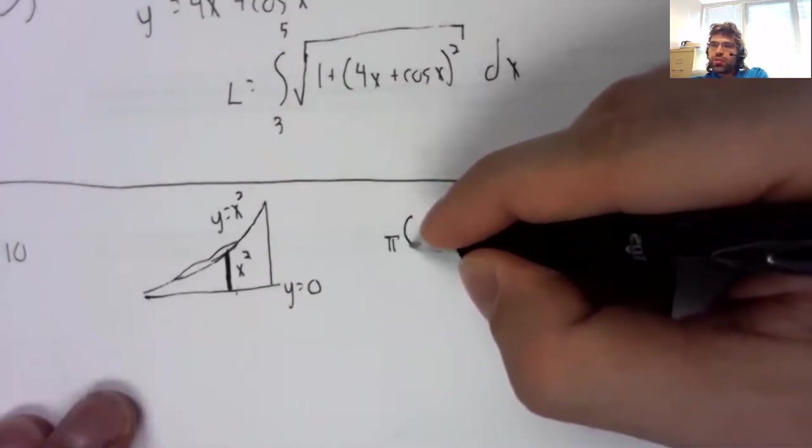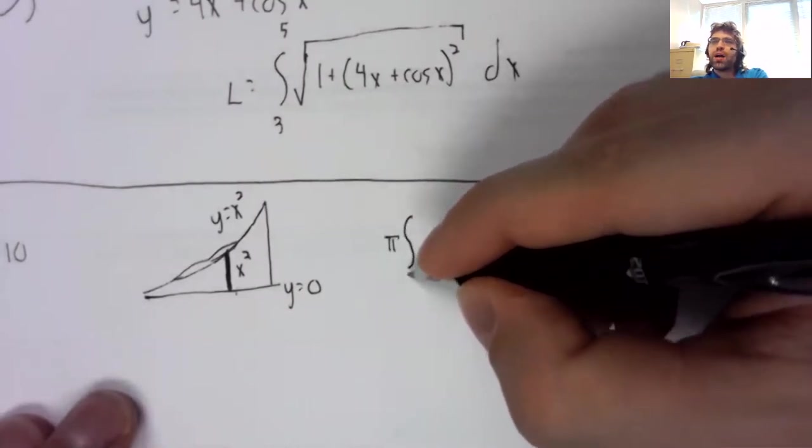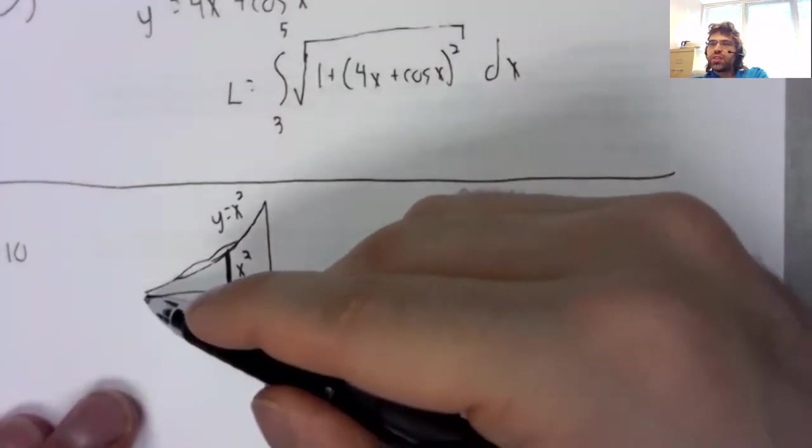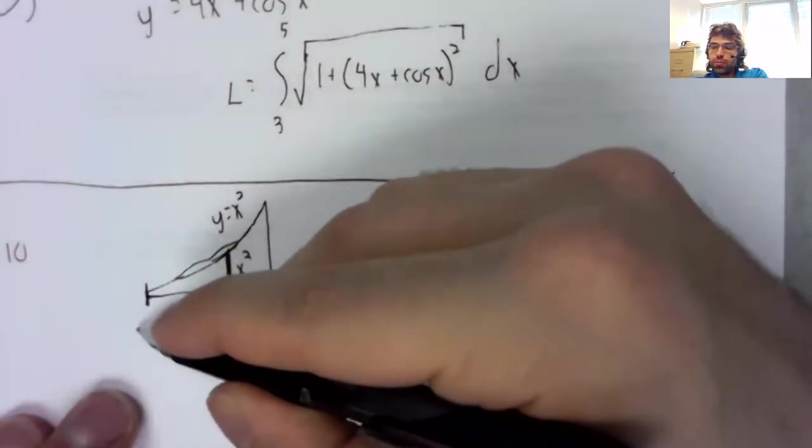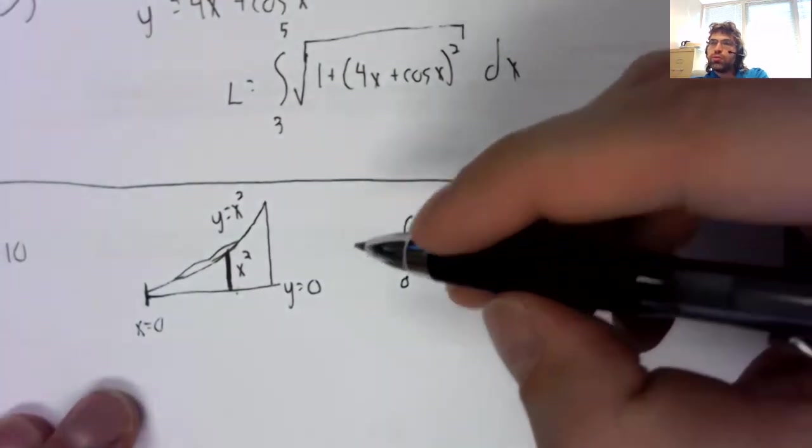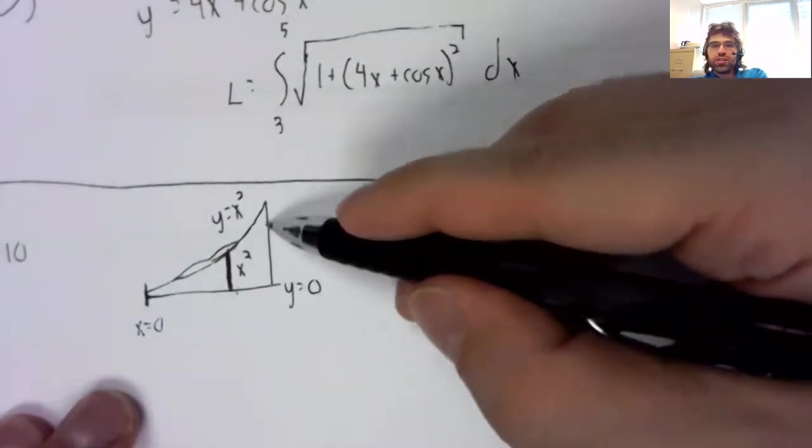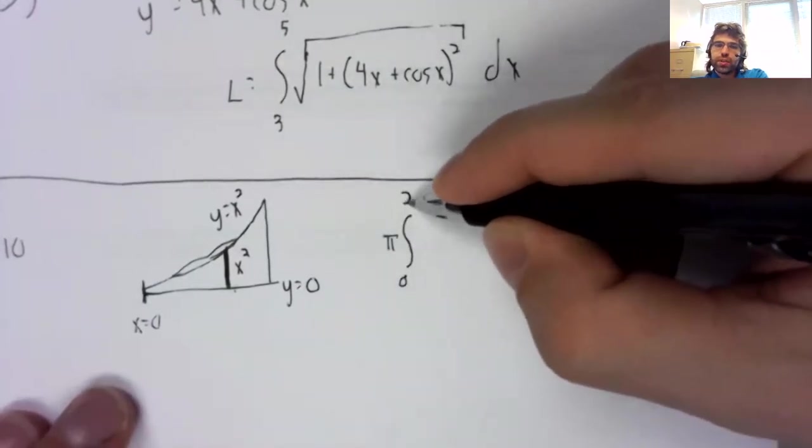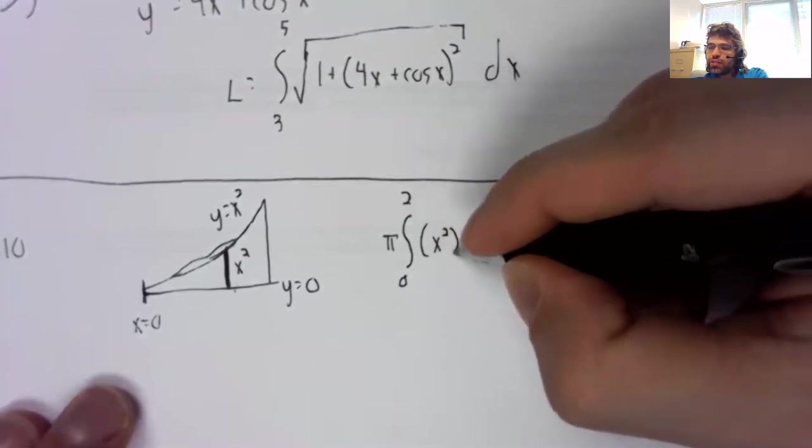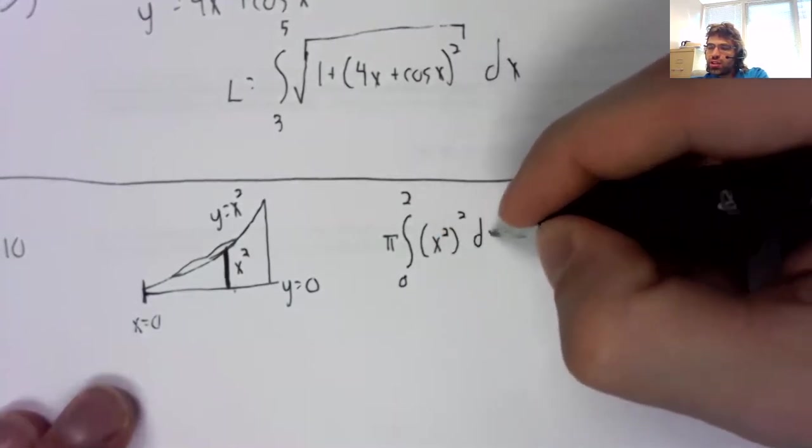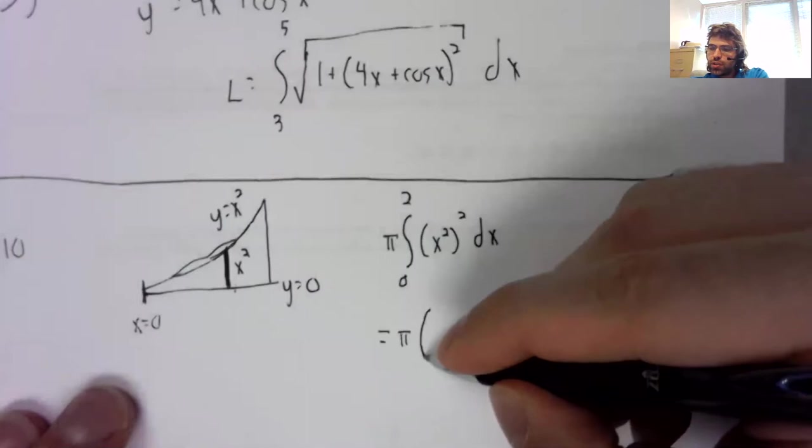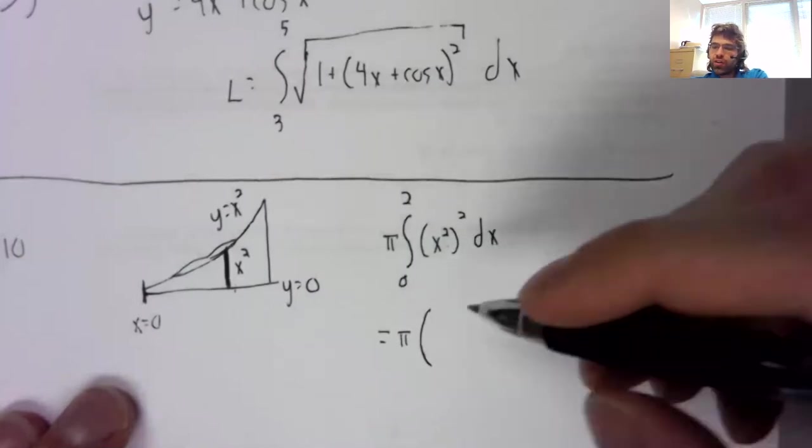So we set up the integral of pi. This is x equals zero. So the integral from zero to, this is x equals two, pi times the radius squared.